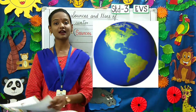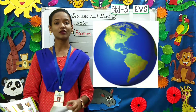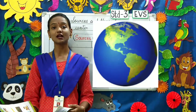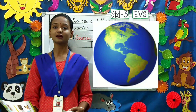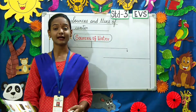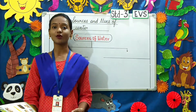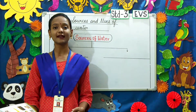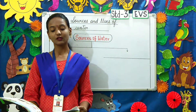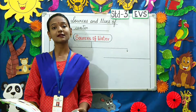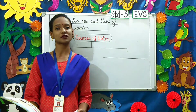The green color shows the land on the earth and the blue color shows the water on the earth. This is why, children, the earth is called the blue planet. It is because the earth consists of three-fourths of water.